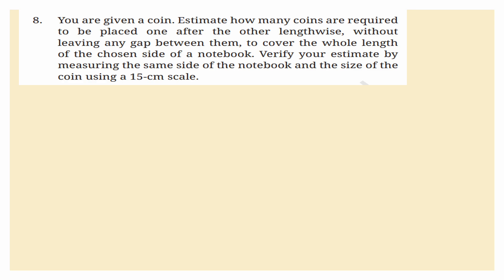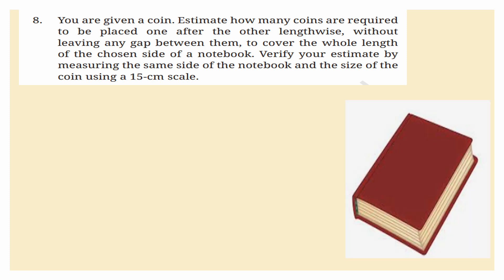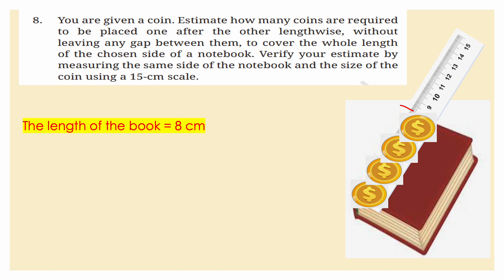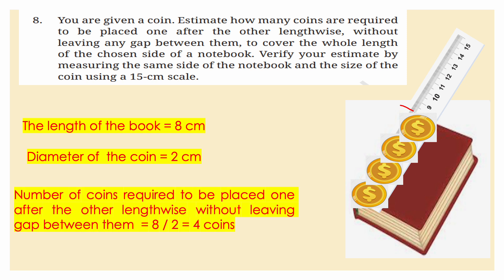You are given a coin. Estimate how many coins placed one after the other lengthwise, without gaps, are needed to cover the whole length of one side of a notebook. Verify by measuring using a 15 cm scale. For example, if the book length is 8 cm and the diameter of a coin is 2 cm, then 8 ÷ 2 = 4 coins are required.